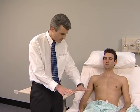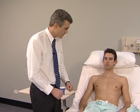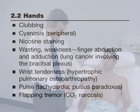The detailed examination begins with the hands. Look for clubbing, peripheral cyanosis, and tar staining. Squeeze the wrist to detect the tenderness of hypertrophic pulmonary osteoarthropathy.